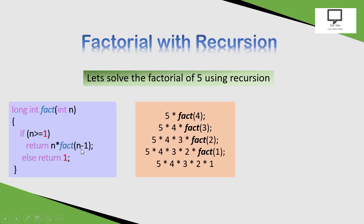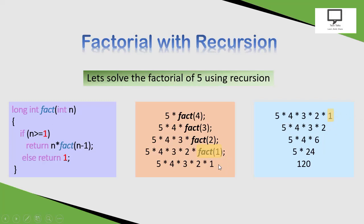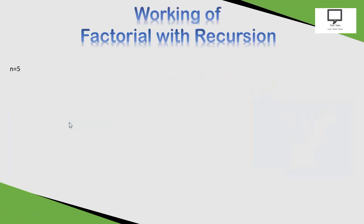After that, the next function call has n equal to 4, then factorial of 3, then factorial of 2, and factorial of 1. At the end, 1 minus 1 is 0, the condition is false, and it returns value 1. Then the results unwind: factorial of 1 returns 1, factorial of 2 returns 2, factorial of 3 returns 6, factorial of 4 returns 24, and the final result for factorial of 5 is 120.